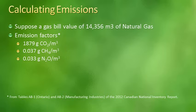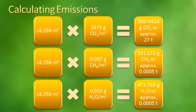Now let's look at a practical example. Suppose that a natural gas bill has a value of 14,356 m³ of natural gas. The burning of natural gas emits CO2, CH4, and N2O. For this example, three emission factors have been provided. To obtain the GHG emissions resulting from this activity, the amount of natural gas must be multiplied by each emission factor, as shown here. Note that in each case, the meters cubed unit is cancelled out, leaving only the unit of GHG.